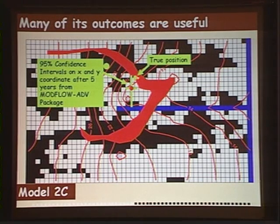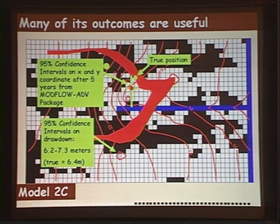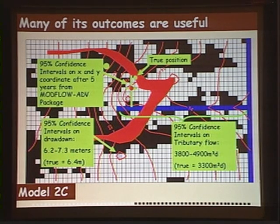It shows the spill will not reach the municipal well. This model is actually good for some other things. If we look at the confidence interval on where the spill was after five years of pumping, the model's confidence intervals include the true location. If we wanted to predict the drawdown on the pumping well in the south, the predicted confidence intervals include the true drawdown. It doesn't quite capture the flow at the tributary, but it's not so far off.